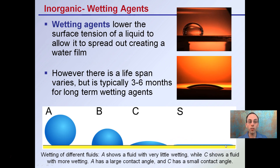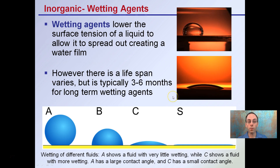The downfall of wetting agents is that there is a lifespan, which varies — typically around three to six months for long-term wetting agents. This is why getting new soilless media is advised, because wetting agents can degrade over time. If you're reusing media, while it may work well initially, those wetting agents may not be as effective the second time you use that soilless media.